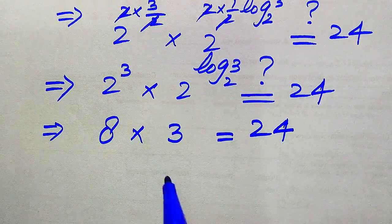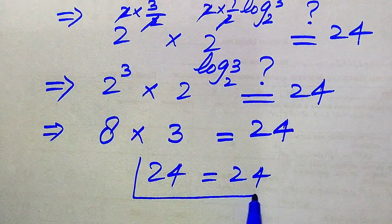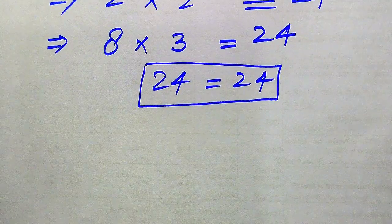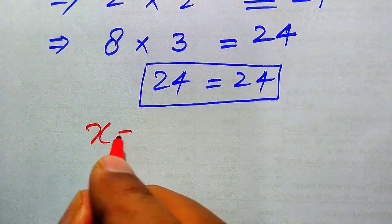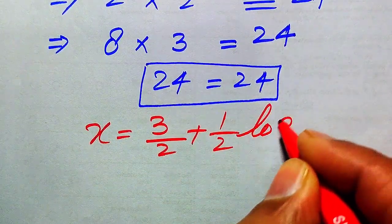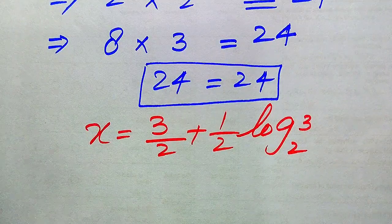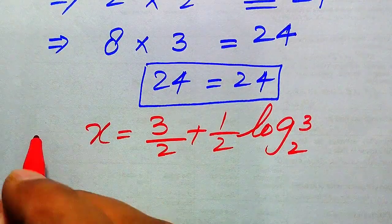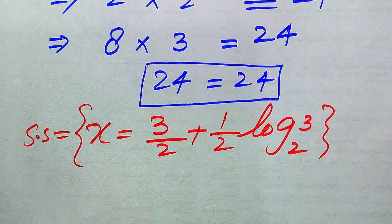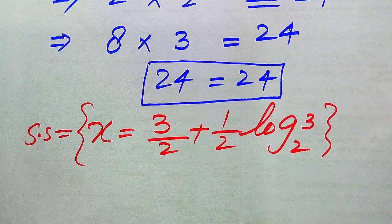So we get 8 times 3 equals 24, and 24 equals 24. Both sides are equal, which confirms that the value of x equals 3 over 2 plus 1 over 2 times log base 2 of 3 satisfies the given equation. This is the final solution. Thank you for watching this video — please subscribe to my channel for more exciting videos.